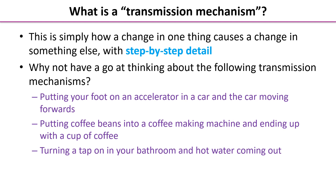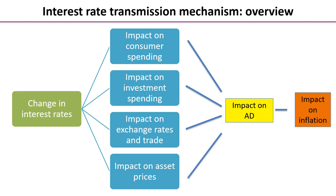Hopefully you've had some fun thinking about those different flowcharts — how you'd get from one end to the other. Let's have a look at what happens with interest rates. We have a change in interest rates: Andrew Bailey and the Monetary Policy Committee decide to change interest rates, and it has four main channels of impact. Impact on consumer spending, impact on investment spending by firms, impact on exchange rates and trade, and impact on asset prices.